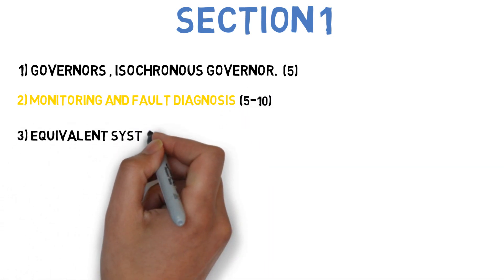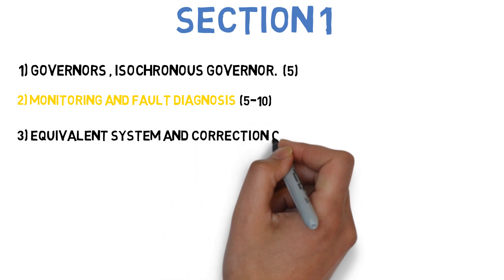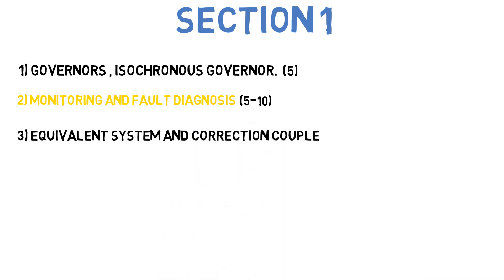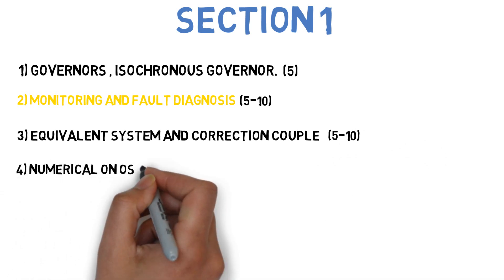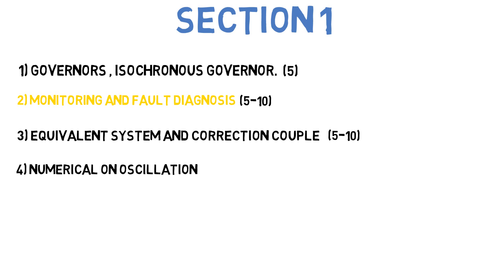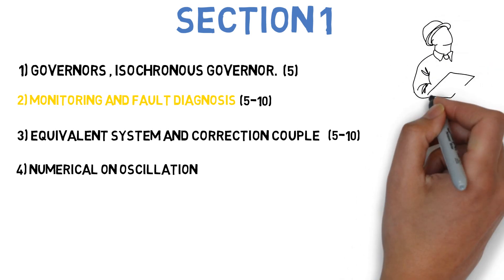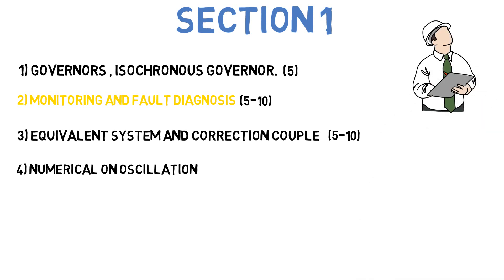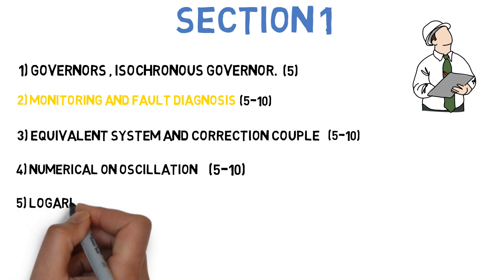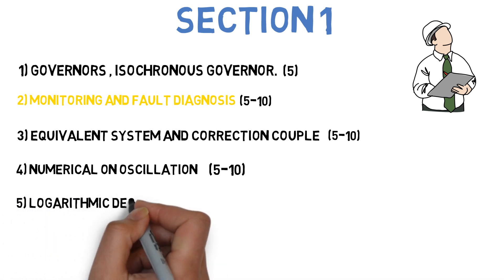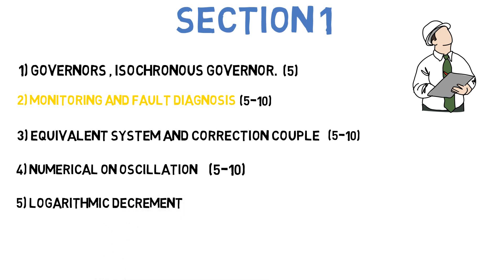Next is: explain dynamically equivalent system and correction couple, or state and explain correction couple. This can come for 5 or 10 marks. Next is: determine the natural frequency of oscillation of a half solid cylinder of mass m and radius r when it is slightly displaced from the mean position and released — 5 to 10 marks. Next: what is logarithmic decrement and what is its importance? This can come for 5 to 10 marks. These are the 5 questions you need to cover in section 1.